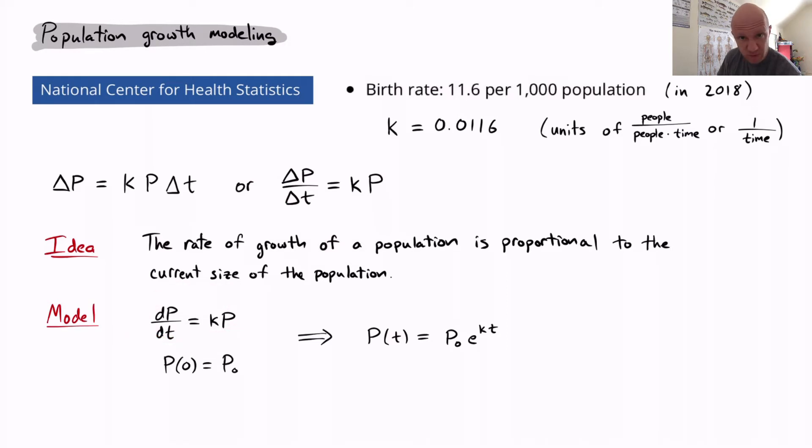So now we have a differential equation dP/dt equals kP, which says the instantaneous rate of the change of the population is proportional to the population itself. And we also have an initial value P(0) equals P0, where P0 is just the starting population. That guy right there then is an initial value problem, an IVP, for the population.